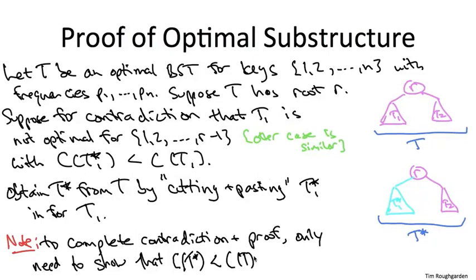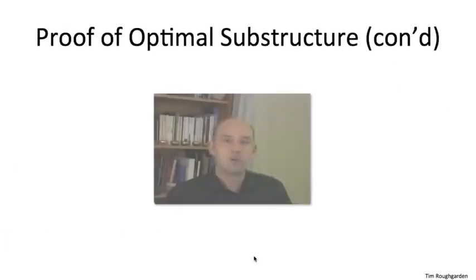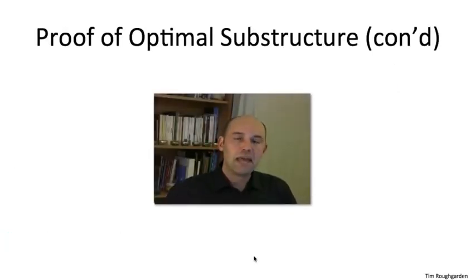So to complete the contradiction and therefore the proof of the optimal substructure lemma, all we have to show is that the weighted search cost of T* is strictly less than that of T. That would contradict the purported optimality of T. That's precisely what I'll show you on this next slide, and it's going to be evident if we do a suitable calculation.